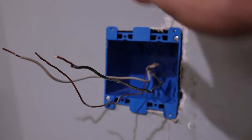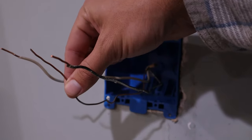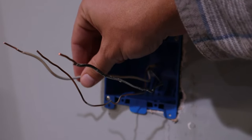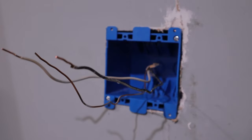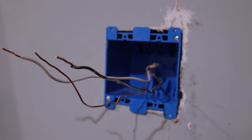All right, so now we've got our three wires here. We've got our bare copper wire, which is the ground, white wire, which is the neutral, and of course the black wire, which is the line or the hot wire.